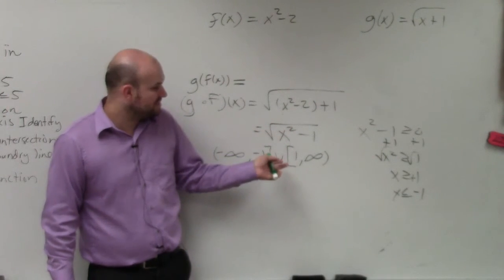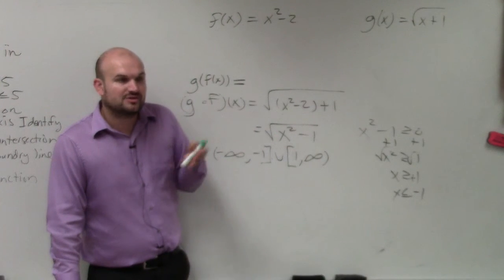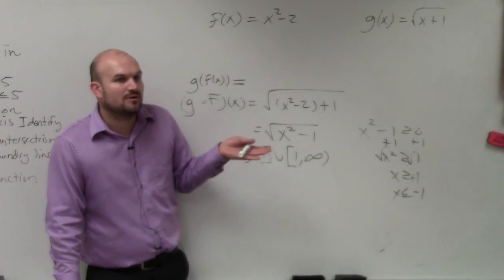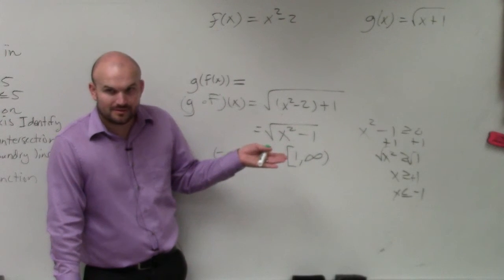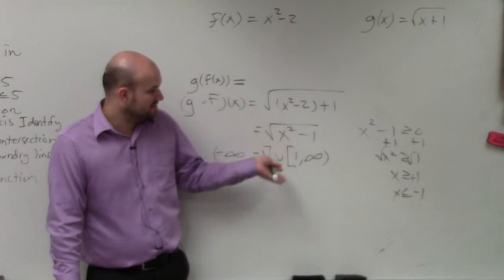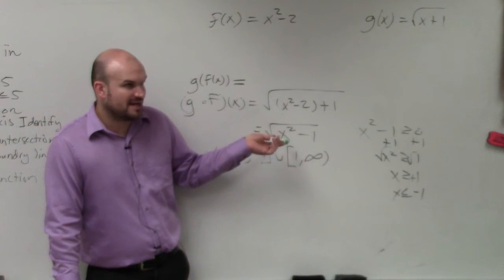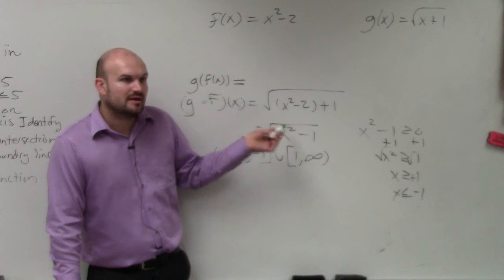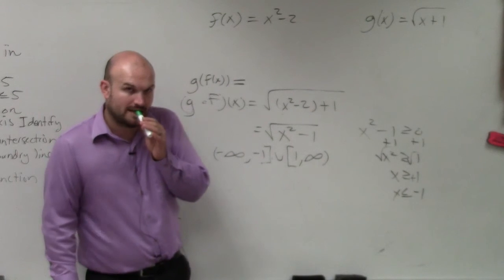But you can't use all the numbers between negative 1 and 1, such as negative 1 half, or 1 half, or 0. Do you guys agree with me? Because if you plugged in those fractions, they would make that negative. Try doing negative 0.5 squared, and then subtract 1. It makes it a negative number under the radical. So it doesn't work.